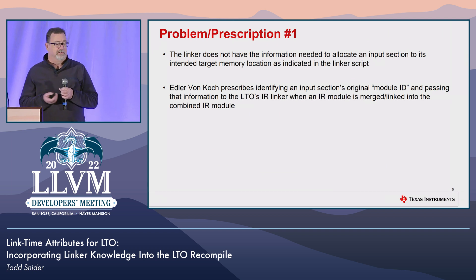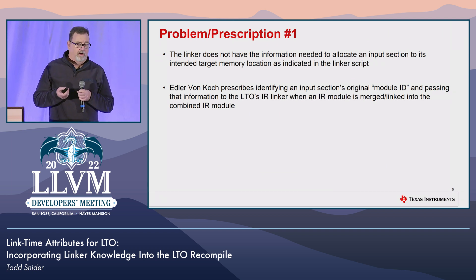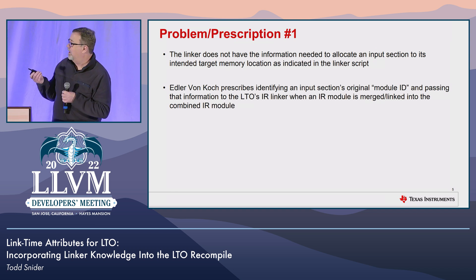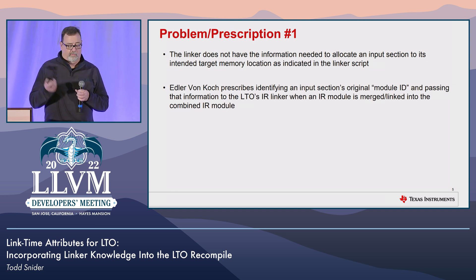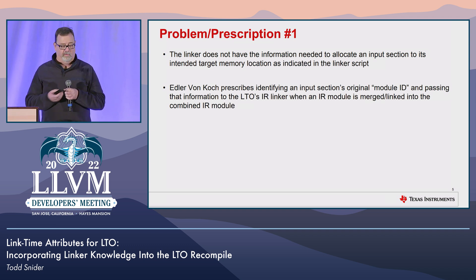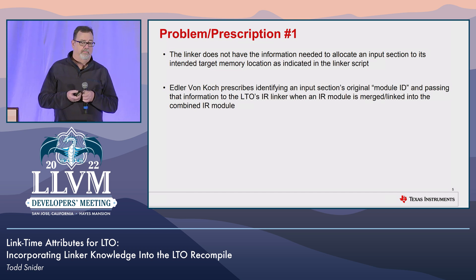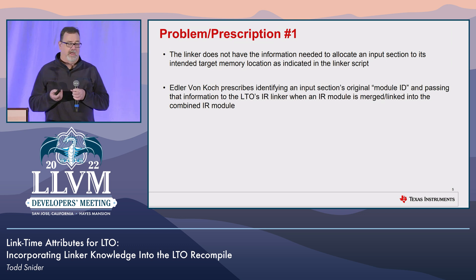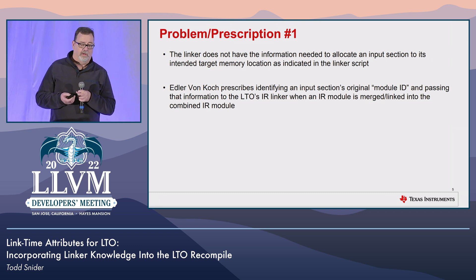The first problem that von Koch identified is that we need some information to go into the combined IR and carry through to the final link to identify where the input section comes from. Von Koch prescribes identifying an input section's original module ID and passing that information to the LTO IR linker.